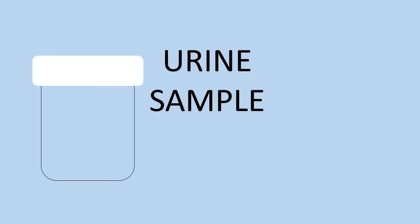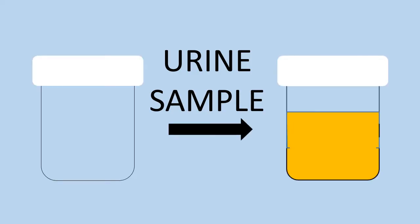This is how you should collect a urine sample. First wash your hands and then your genitalia. Then collect some midstream urine, approximately half full of the sterile container that you will receive, and take it to the laboratory for analysis.